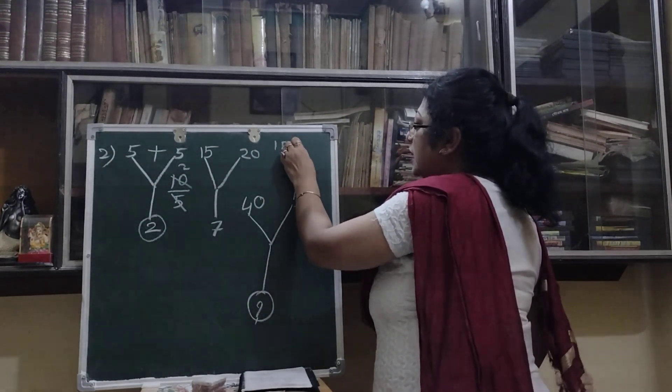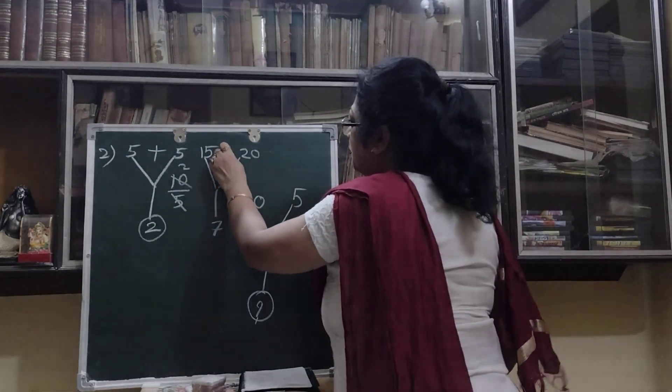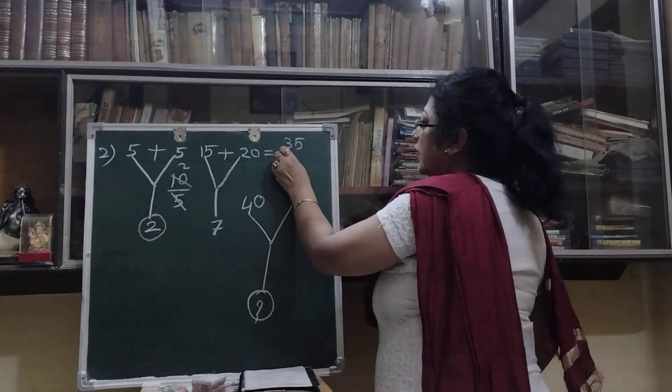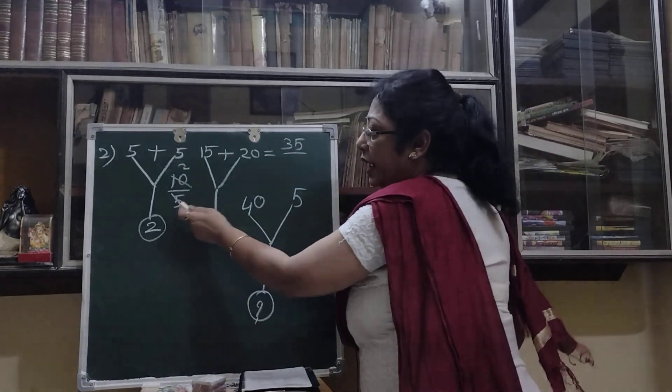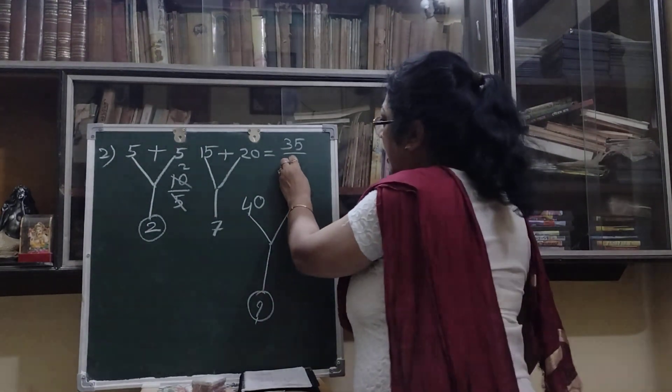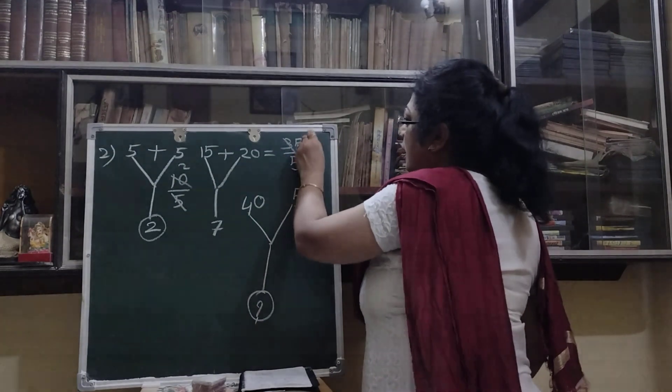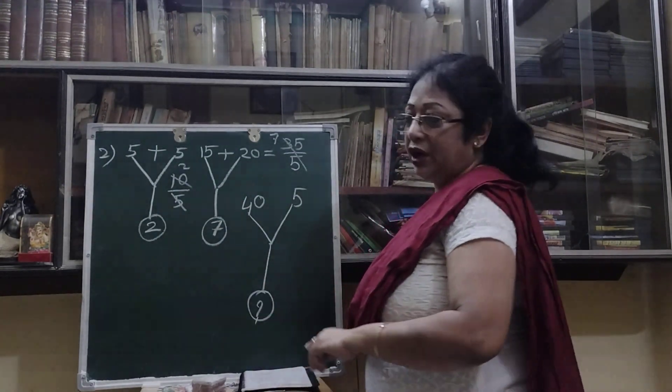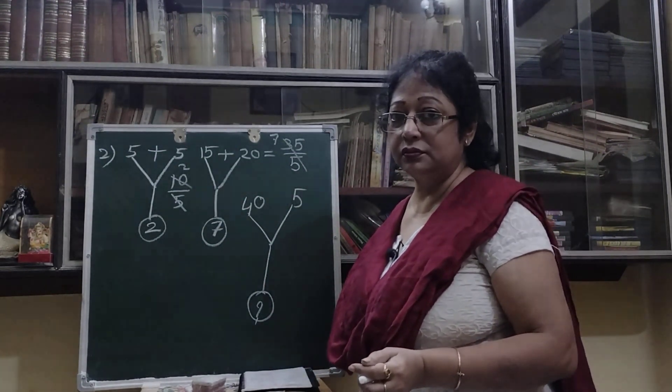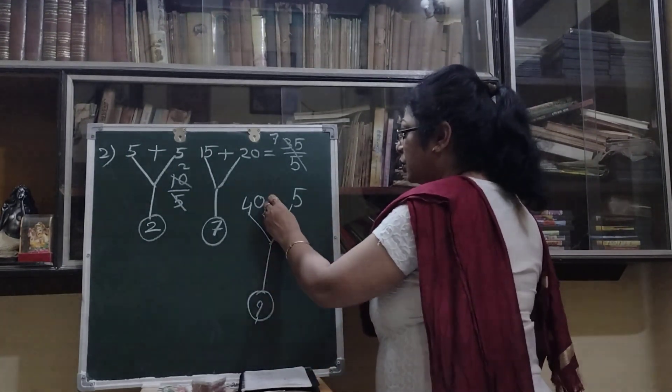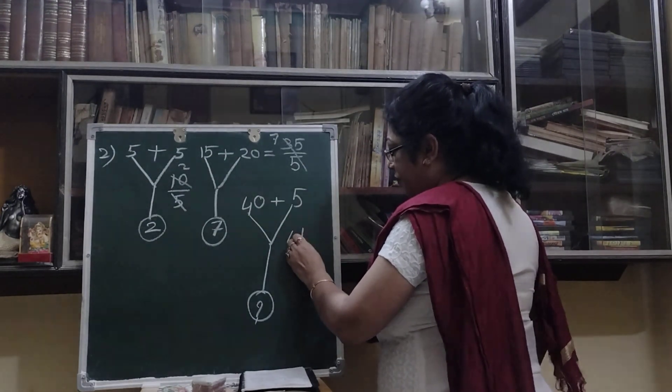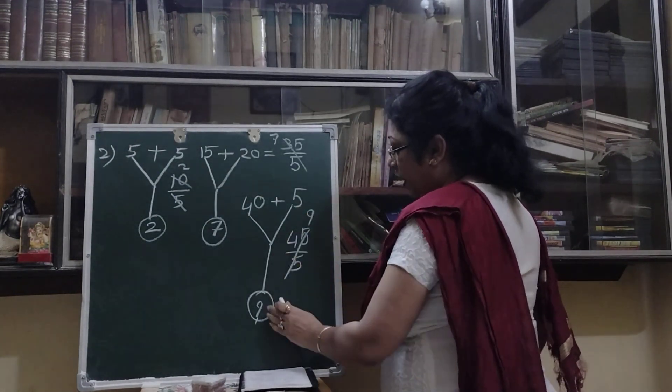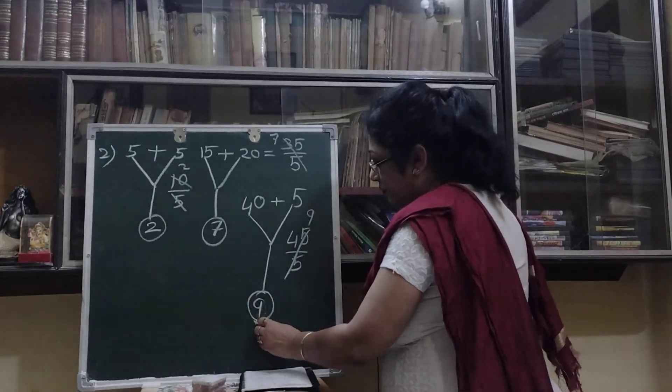15 plus 20, that is 20 plus 15 is 35, divide by, here I divided 10 by 5. Here also I will divide 35 by 5. Now see, 5 sevens are 35, so 7. So children, I will do or you will do, who will do? I am doing it for you. It is easy one, all of you can do. So 41 plus 5, that is 45, divide by 5, what you will get, 9 here.